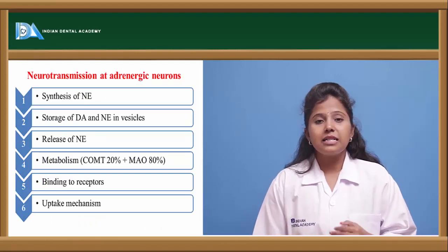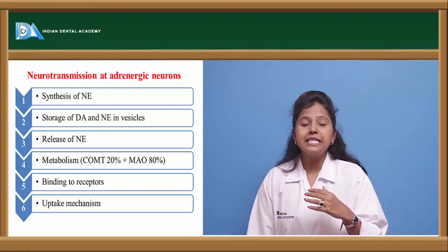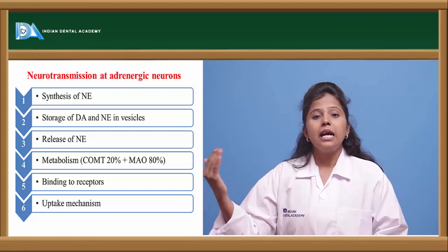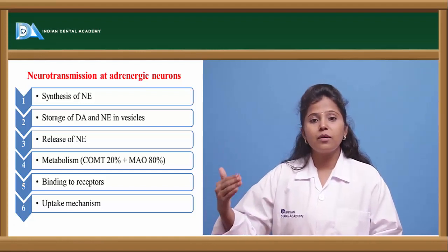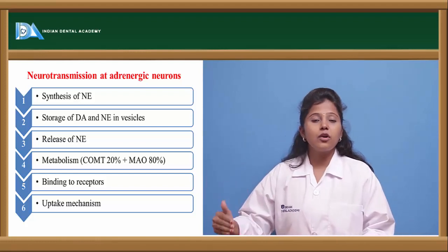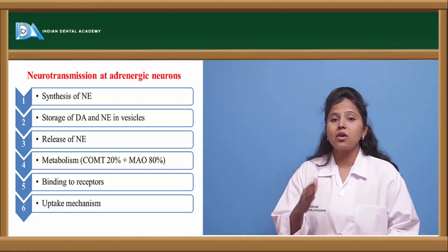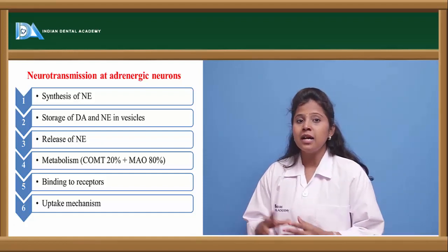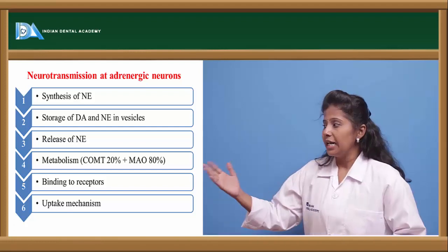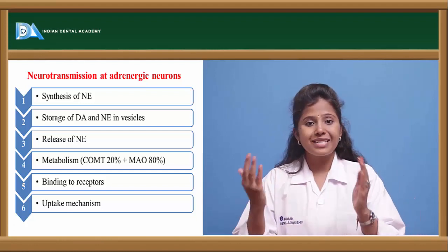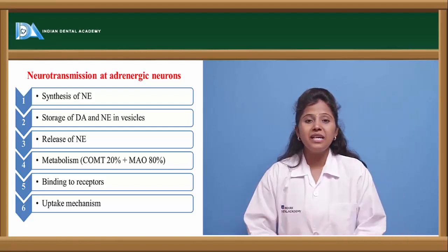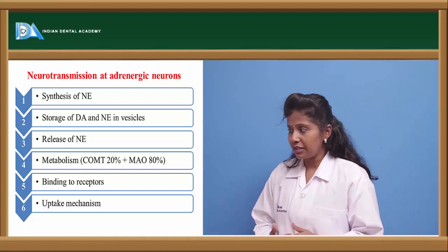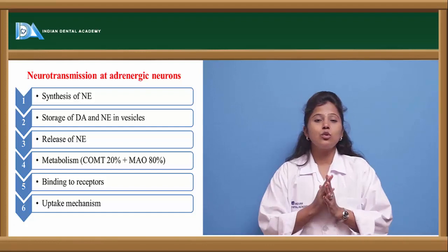Here we can see how the neurotransmitter is released and how it shows its effect. The neurotransmitter is first synthesized in the body — for example, norepinephrine is synthesized from the amino acid L-tyrosine: tyrosine → DOPA → dopamine → norepinephrine → epinephrine. After synthesis, the neurotransmitter is stored in synaptic vesicles. Once the sympathetic nervous system is activated, it causes release of the neurotransmitter.